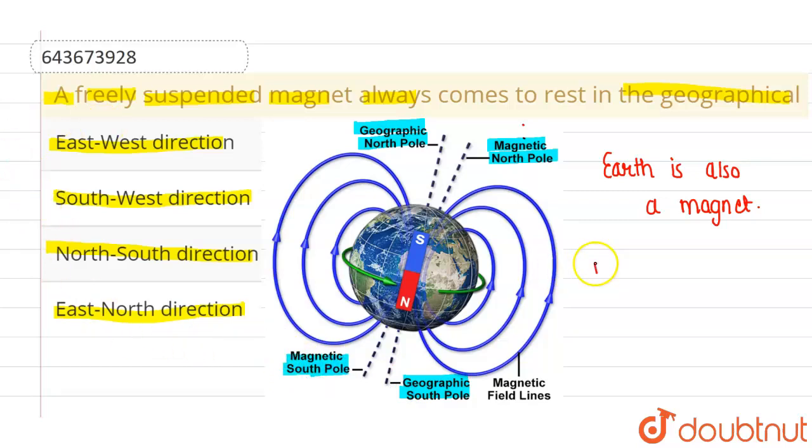know that north pole attracts south pole. Therefore, since the geographical south pole is magnetic south pole, it will attract north pole here. So this will be the north pole. And since the geographical north pole is magnetic north pole, this will attract south pole here.